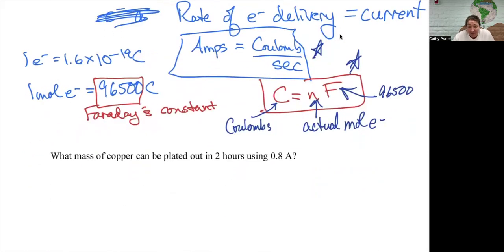What mass of copper can be plated out in two hours using 0.8 amps? So amps equals coulombs over seconds. My time's in hours, so I'm going to have to convert it to seconds. So 0.8 amps equals coulombs over two hours times 60 minutes times 60 seconds. Or two times 3600 is 7200 seconds times 0.8. Tells me that there's 5760 coulombs delivered during this time.